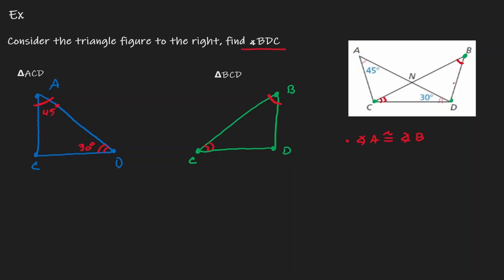Whenever we are marking any kind of a figure, those marks that match up — we are saying that they are congruent to each other. Following that, notice that angle D has two marks and angle C has two marks, then we are saying that angle D is congruent to angle C.